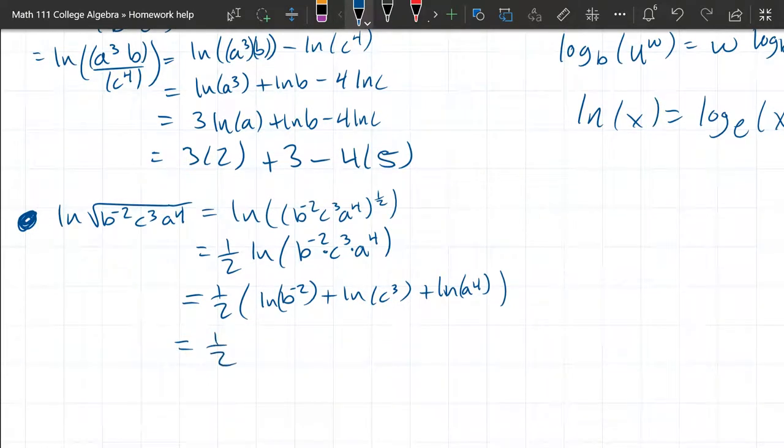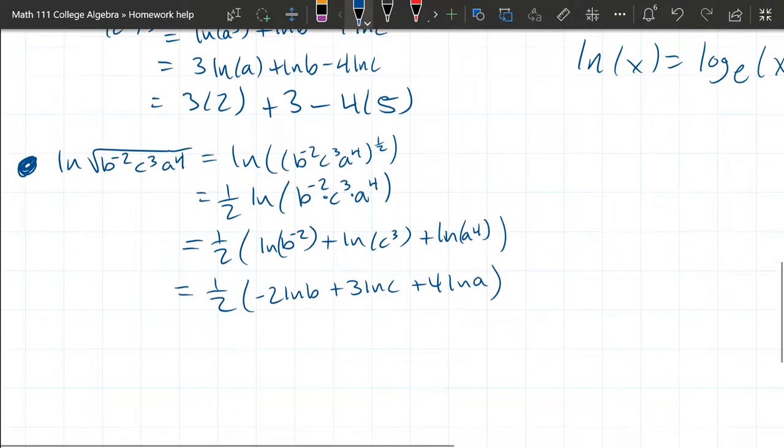And now we're going to use the property that we're going to bring down the coefficient, or the exponent as a coefficient. Negative 2 ln B plus 3 ln C. Plus 4 ln A. We already know ln B, ln C, and ln A. So I'm just going to circle these. You're going to fill in the values for those three. And then that is going to be your answer. Next part.